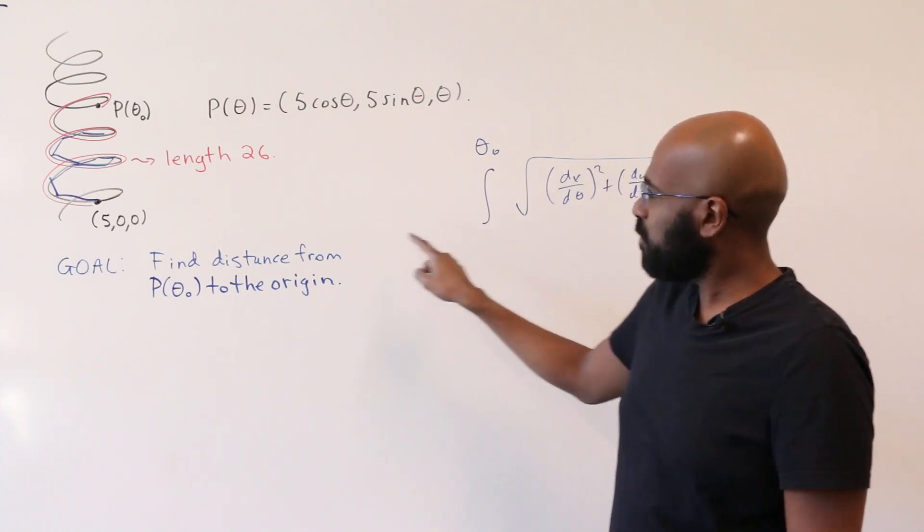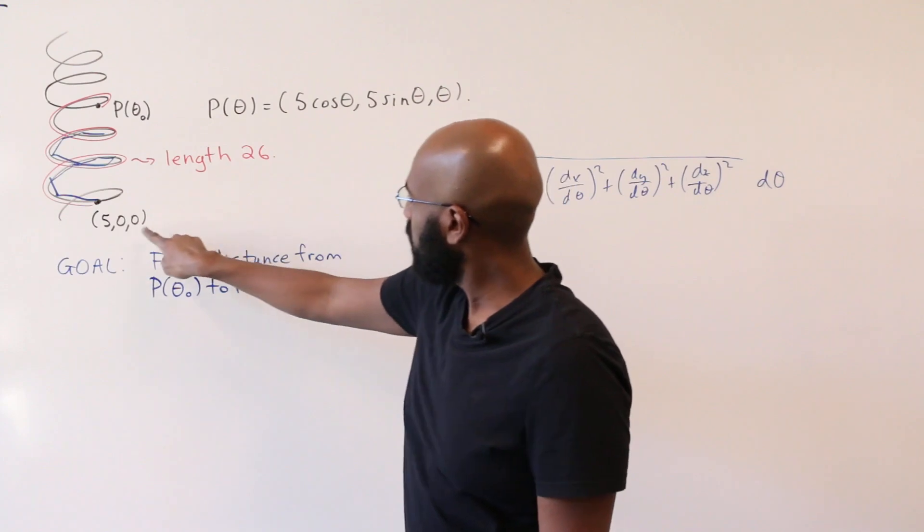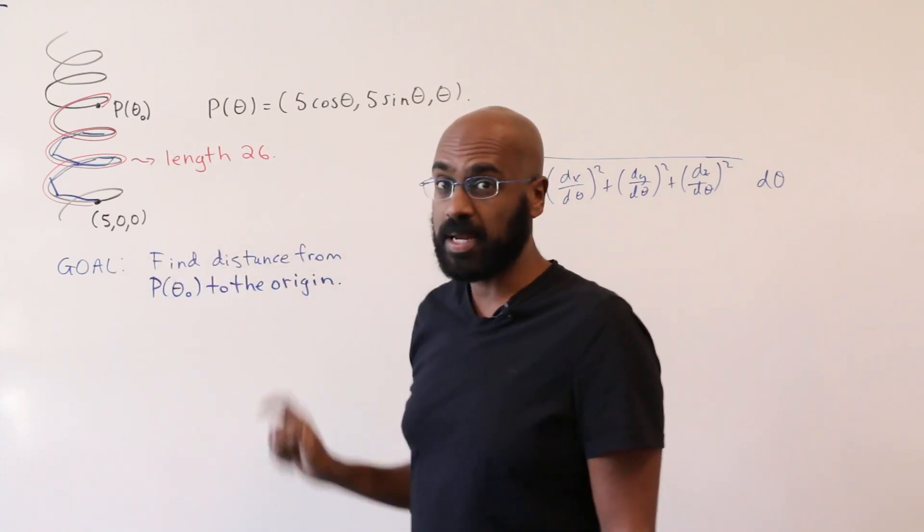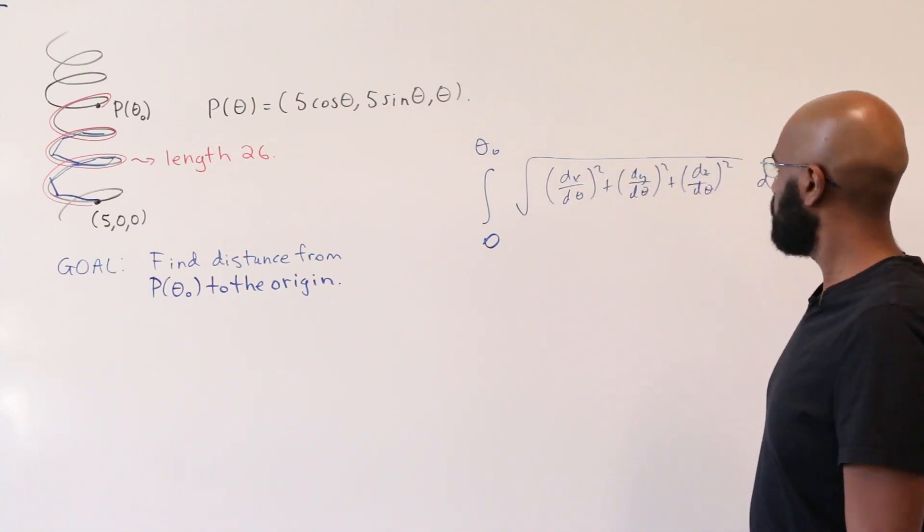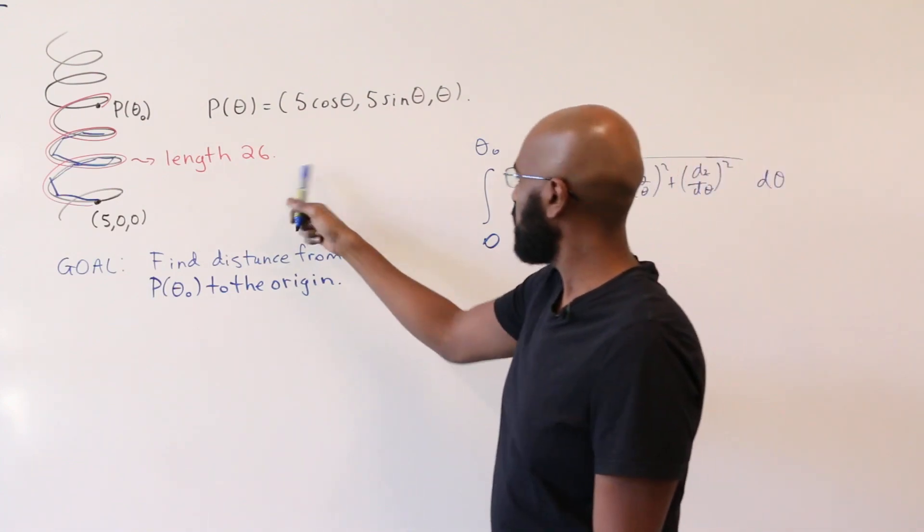Now we're starting from the point (5,0,0). At that point, theta is zero, though we recognize that from the last coordinate. So we'll be integrating here from zero to theta naught, and the information we're given is this length is actually 26.